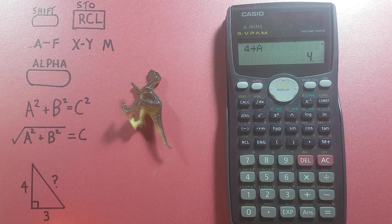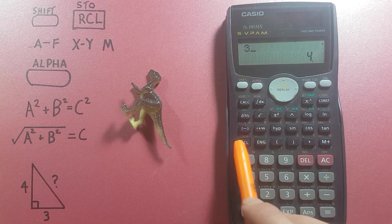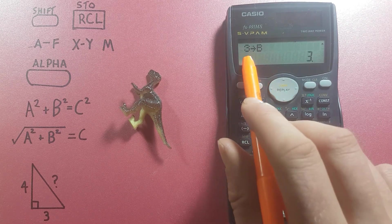Save the b side of 3 into the b slot, 3, shift store b, 3 into b.